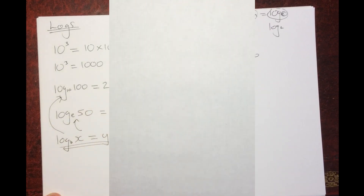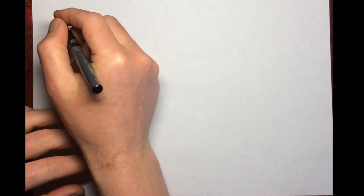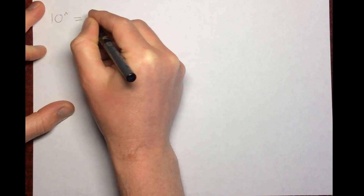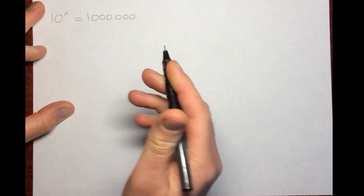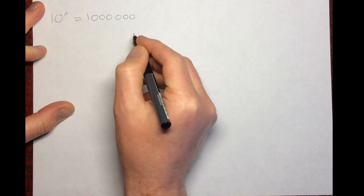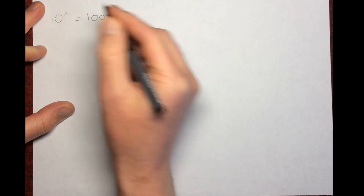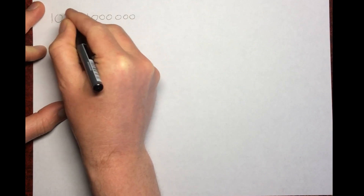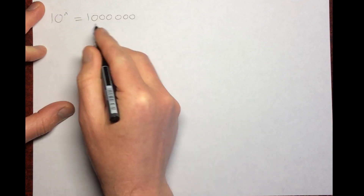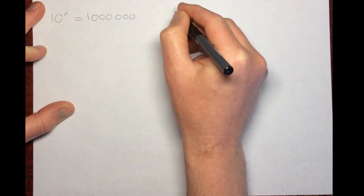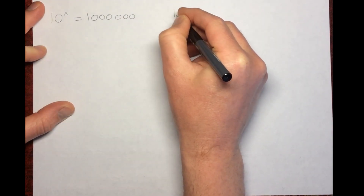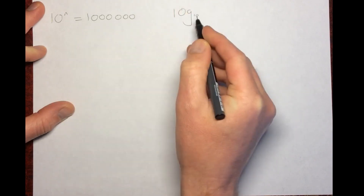Let's look at how we can actually use logs with a couple of examples. Say you've got 10 to the power of n equals 1 million. We want to work out n — what value do you have to raise 10 by to get a million? You could tell me off the top of your head, but let's go through the process of working this out properly.